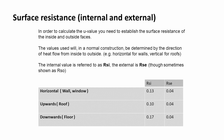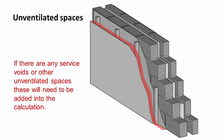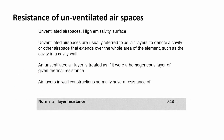We also have values for the resistance of unventilated airspaces within the construction, usually referred to as air layers. These are cavities or other airspaces that extend over the whole area of an element — not just a small pocket of air. We would give an unventilated air layer treatment as if it were a homogeneous layer with a given thermal resistance of 0.18.